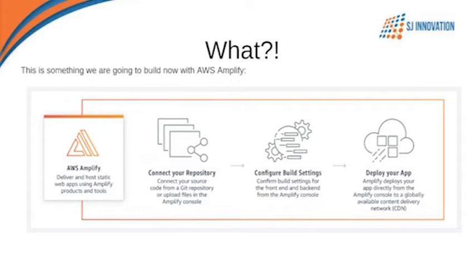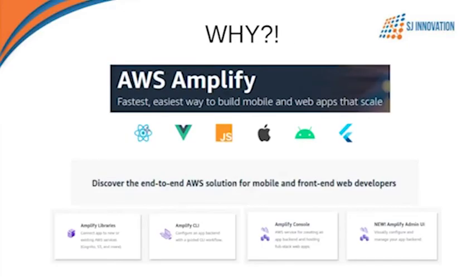The pipeline hosts and delivers your web or mobile application by connecting through your codebase from your repository as a source, or you can upload your files directly to the Amplify Console. After having this codebase, it will help you configure the build settings for your front end as well as your back end, as per your framework — React, Vue, or other JS-related frameworks along with mobile development platforms like iOS, Android, or Flutter.